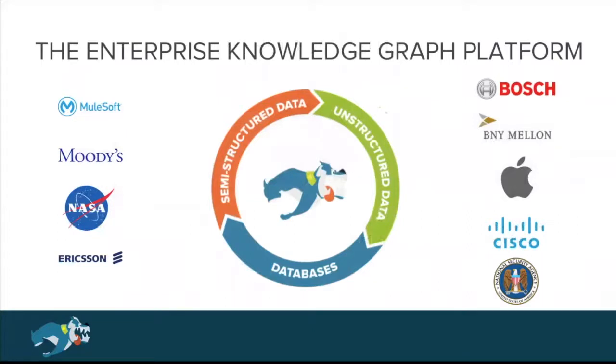Stardog is the enterprise knowledge graph platform. We allow organizations to query massive, disparate data and transform it into actionable insights by combining a cutting-edge graph database with a world-class knowledge toolkit. Our partners include Fortune 2000 companies in financial services, healthcare, energy, and government. They all use Stardog to eliminate enterprise data silos. We're privately held, headquartered in Arlington, Virginia, where it's a balmy 78 degrees Fahrenheit today.